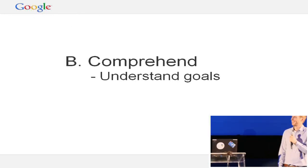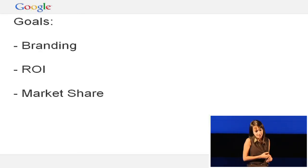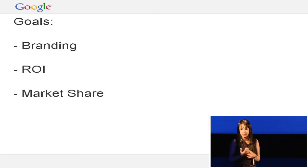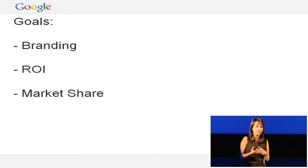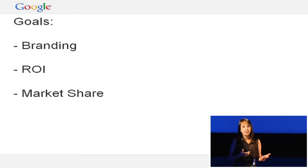This takes us to the second C, which is comprehend — where you understand and really understand the goals. What is it that your client actually wants to achieve? Very simplistically, a lot of brands appoint us marketers to look at three main goals: building your brand, ROI, and increasing market share. But building a brand is multifaceted — it could involve brand awareness, preference and consideration, or associations with lifestyles. It's really important to understand what your client's goals are, as this leads to your measure of success.